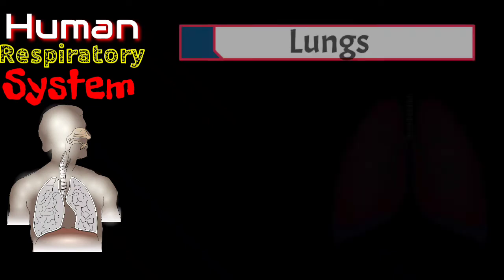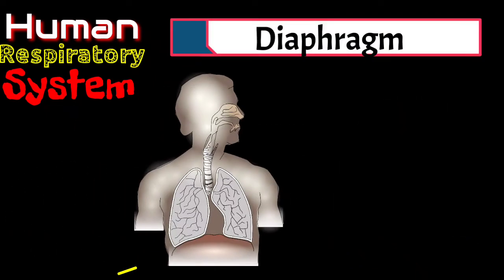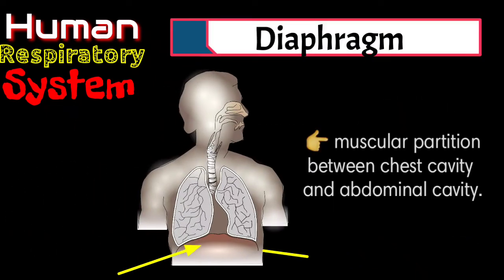Next is the lungs. The lungs are a pair of breathing organs located within the chest which remove carbon dioxide from and bring oxygen to the blood. Next is the diaphragm — a muscular partition between the chest cavity and abdominal cavity.